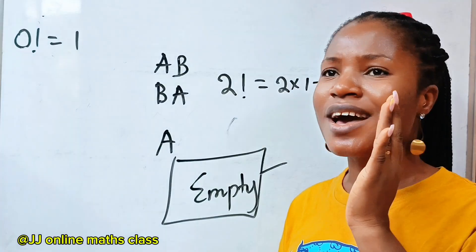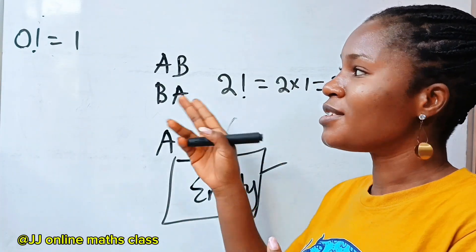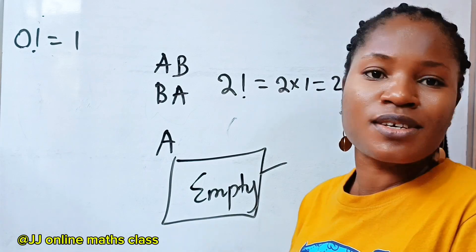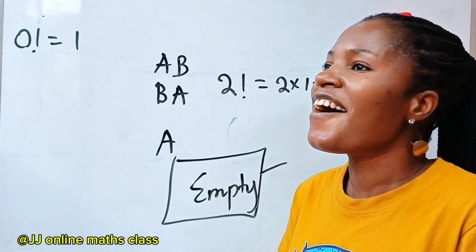Empty as our answer, which is just one arrangement. I don't know if that makes sense to you, but that is the most amazing explanation to zero factorial is equal to one. When you have nothing to arrange, you have only one way to arrange it. Nothing.